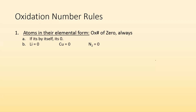Here are the rules. Rule number one: atoms in their elemental form have an oxidation number of zero — always. If it's by itself, it's a zero. Lithium in its elemental form: zero. Copper in its elemental form: zero. N₂ is one of those diatomic molecules — nitrogen will always show up in pairs, but that is still its elemental form, so its charge is still zero.